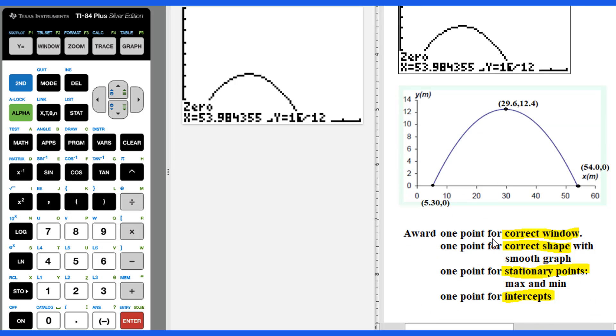We already figured out the first x-intercept, then we figure out the second x-intercept will be 54.0. Then we will use these three points. We got the maximum point already. Then we just smoothly connect these three points into the parabola pattern. And remember, we always reward one point for correct window, one point for correct shape, one point for stationary points, that means this maximum, one point for intercepts. So these two, that's x-intercepts. There is no y-intercept for this graph.